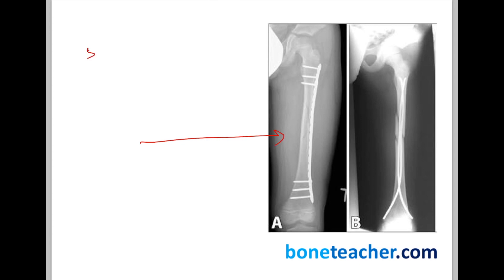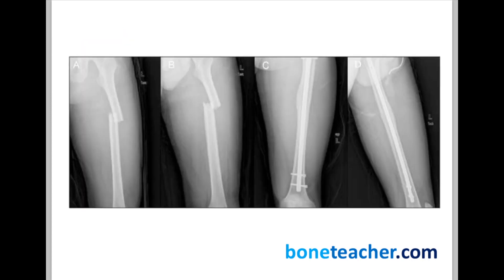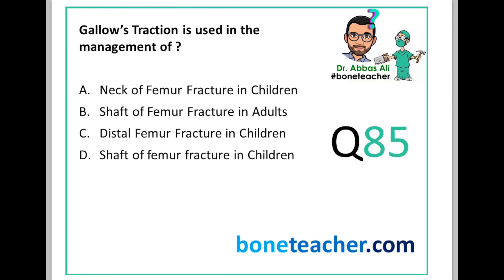Between five to ten years of age, flexible nails are preferred. But if the fracture is an unstable shaft of femur fracture, you can opt for plating as the treatment. Finally, if the child is more than ten years of age, you treat them like an adult and use intramedullary interlocking nails.